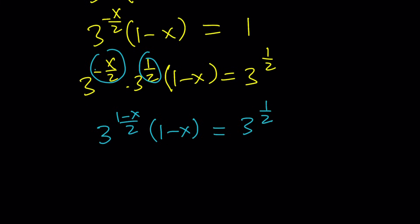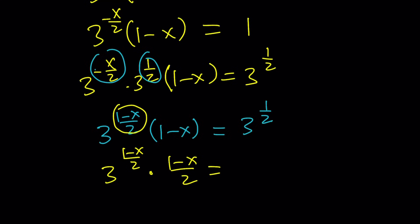Because the exponent is (1−x)/2, I need to divide both sides by two — multiply by one half. So three to the power (1−x)/2 times (1−x)/2 equals three to the power one half divided by two. Now the exponent and the multiplied expression are the same.